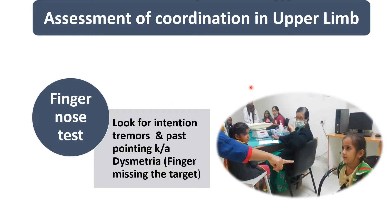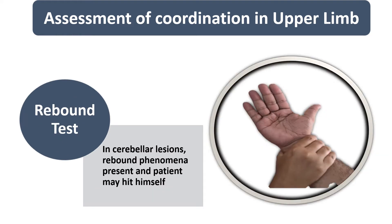After the finger-nose test, we perform the rebound test — also known as rebound phenomena. The child keeps the arm in shoulder-adducted, elbow-flexed, and forearm-supinated position. The examiner holds the child's wrist and tries to extend the forearm; the child resists this movement, and the examiner suddenly releases the grip. In a normal child, the sudden unloading causes the elbow flexor contraction to immediately cease, and the child stops from hitting themselves. In cerebellar disease, the patient cannot stop the flexor contraction, so the child will either hit the face or the shoulder. This is the rebound phenomenon, characteristic of cerebellar disease.